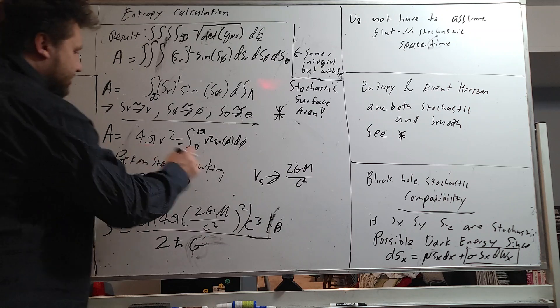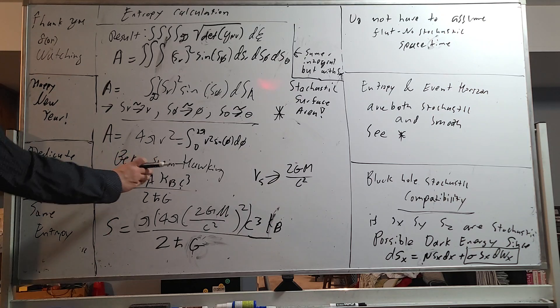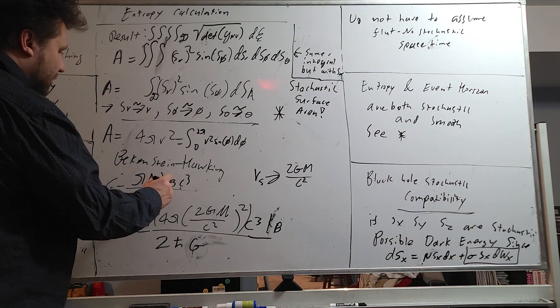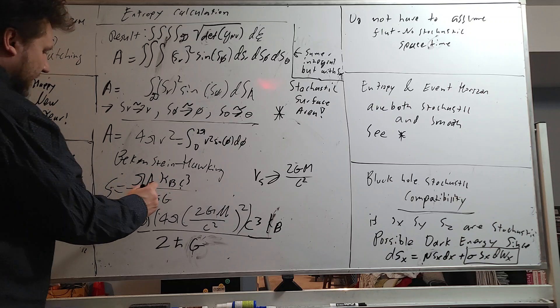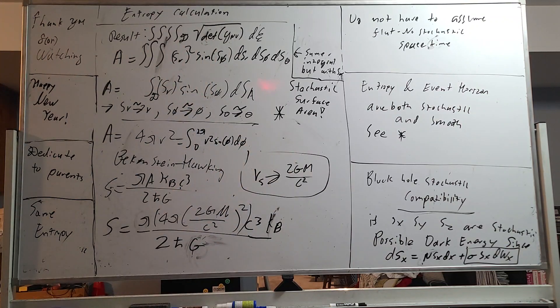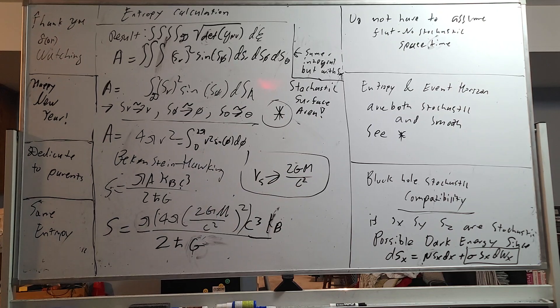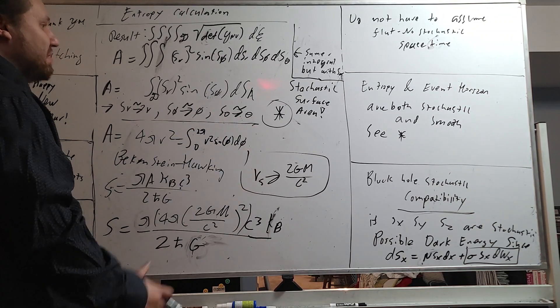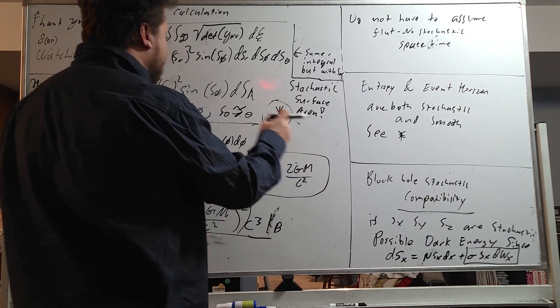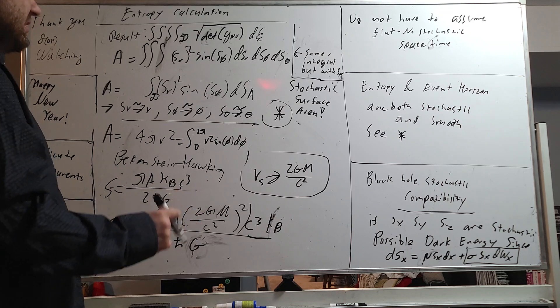So what we can then do is look at something called the Bekenstein-Hawking formulation. And the entropy equals pi A, or A is the surface area for the event horizon. Boltzmann constant, speed of light cubed divided by two times Planck's constant gravitational constant. And all we have to do is plug in this. We get this. There is absolutely no change in the entropy of the black hole if we use stochastic calculus and we're, you know, of liberty with these changed variables. I mean, there's just no fundamental altercation or any clash in mathematics. What we say here is that the surface area is kind of stochastic and it's kind of smooth at the same time. That's a really good interpretation.